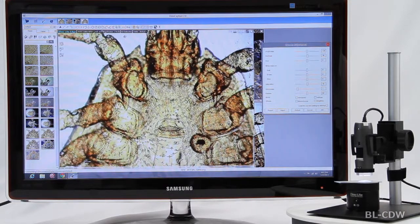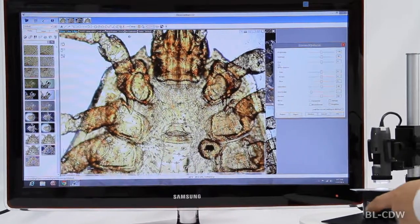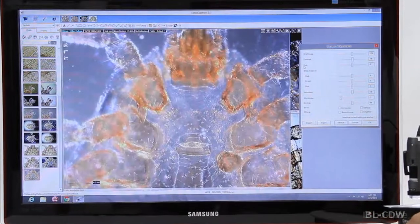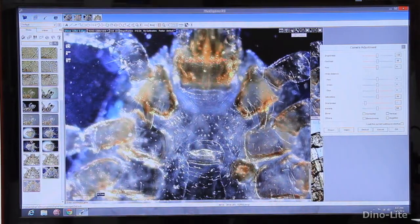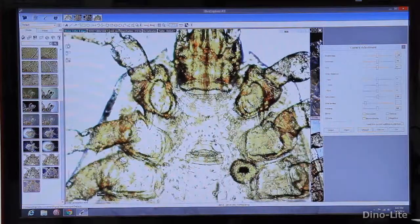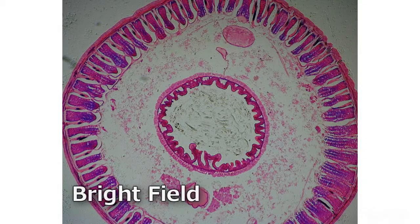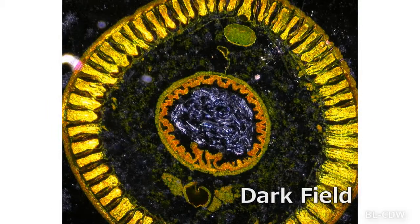By switching to dark field mode with a simple touch, the BLCDW generates a hollow cone of high intensity light to form dark field illumination. This oblique illumination may reveal more surface details that are not easily or well seen under bright field illumination.